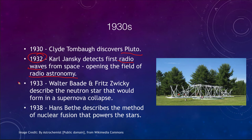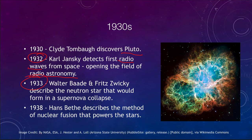In 1933, neutron stars were theorized to exist. Walter Baade and Fritz Zwicky described the neutron star that would form in a supernova collapse, and that is now known to exist at the center of objects like the Crab Nebula.